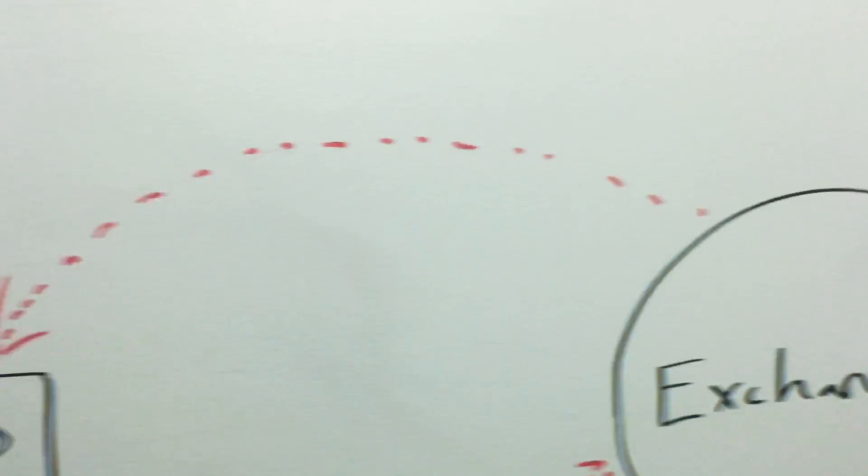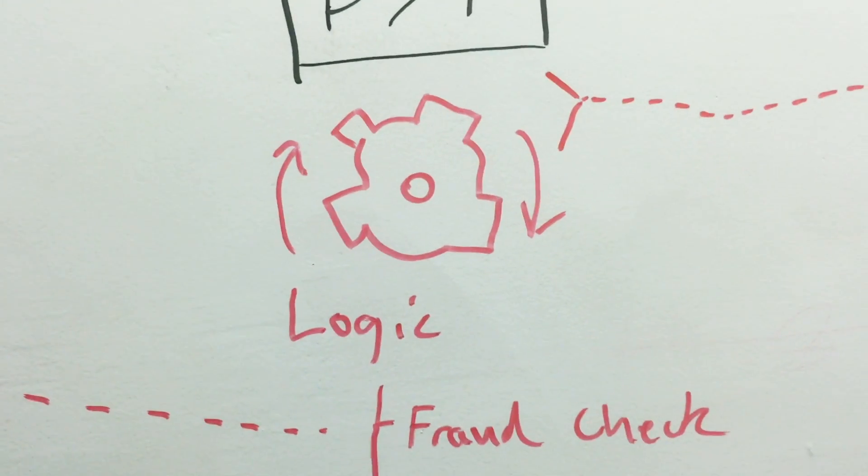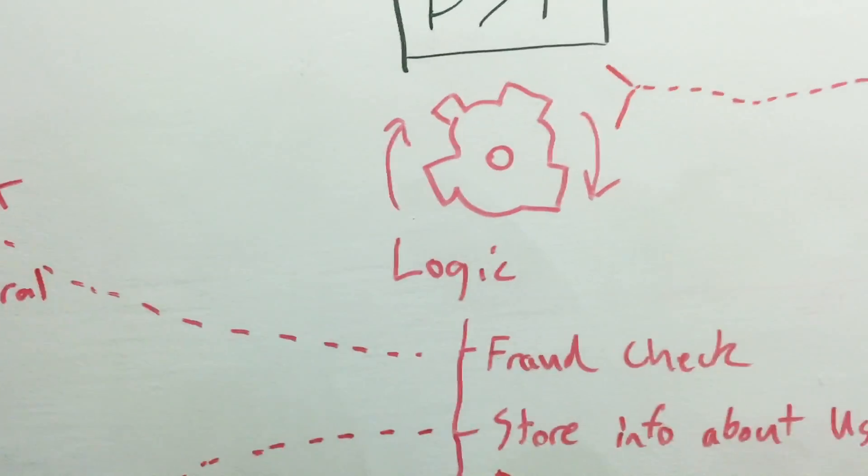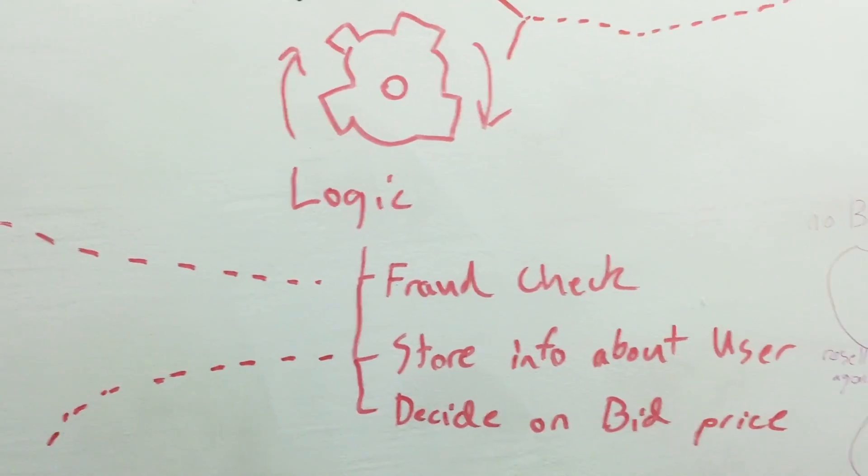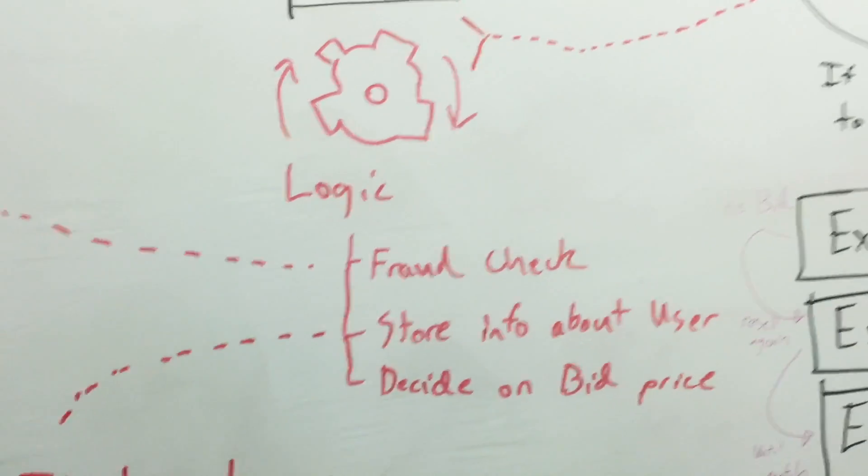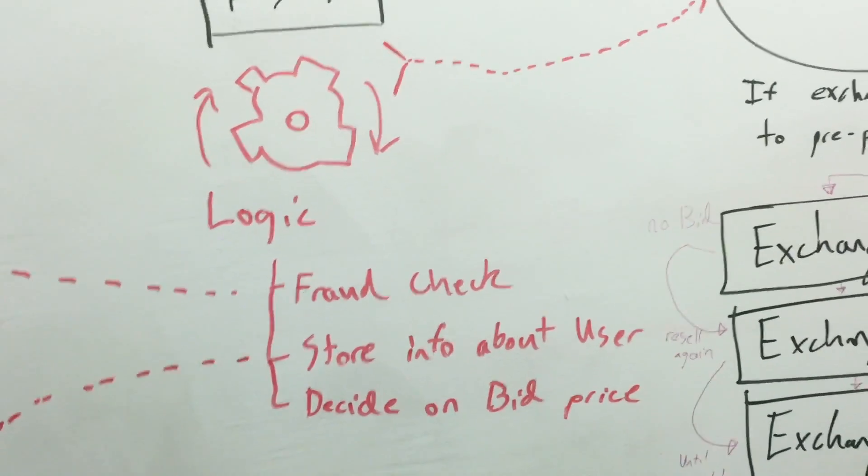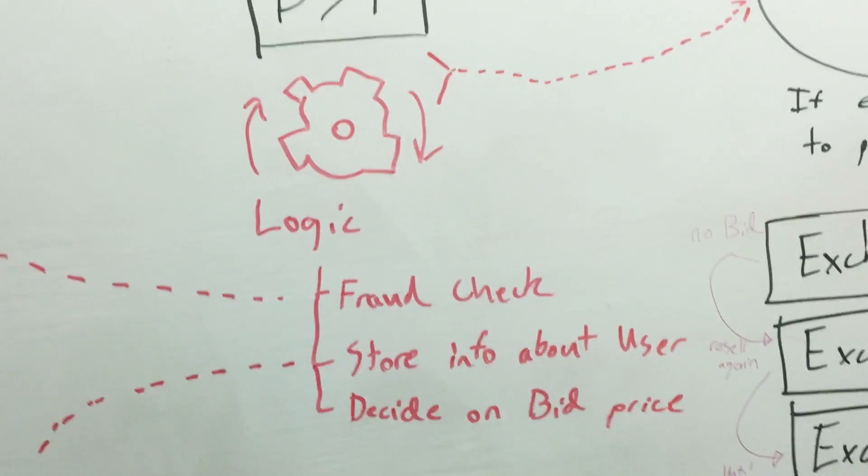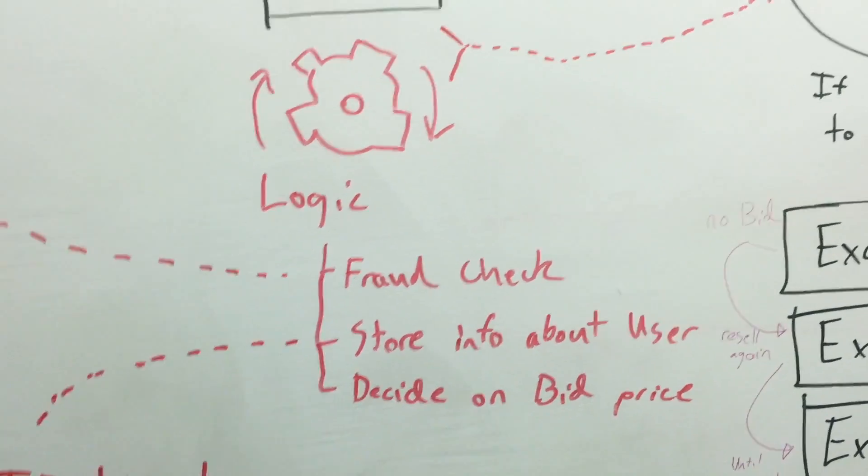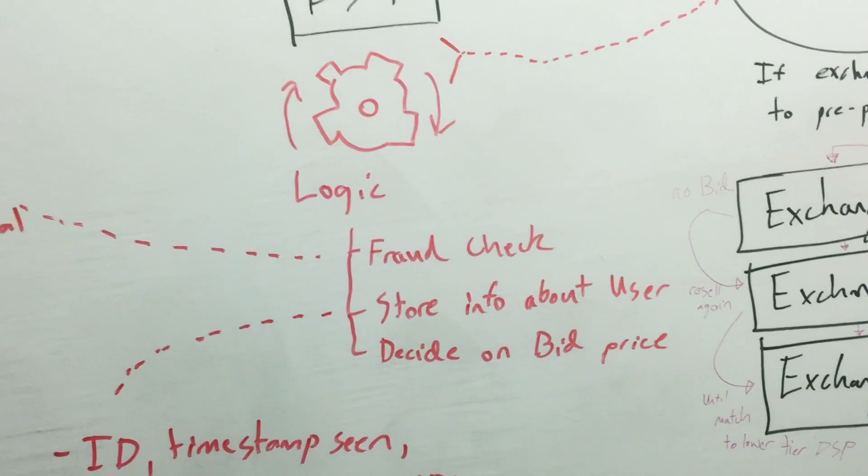It sends that over to the DSP, and each DSP is going to do its own logic, right? In that logic you have fraud checks, you store info about the user, you see the last time that user has seen an ad from you or your advertiser, you're prioritizing campaigns over other campaigns based on how much is left in their budget, like spendable amounts.